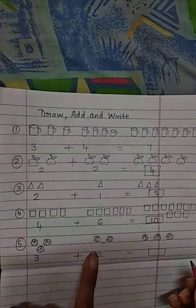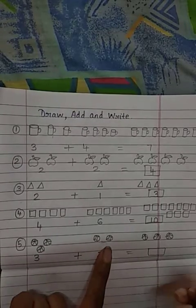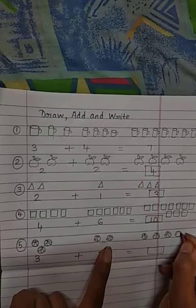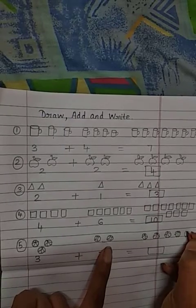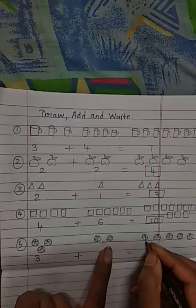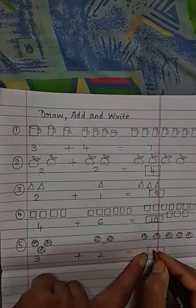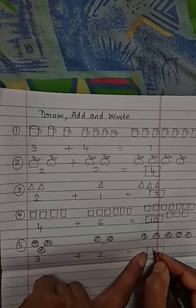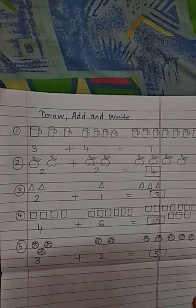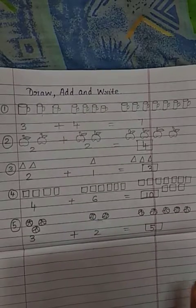3, okay. Now here, how many balls are there? 2 balls, right. So we will draw again 2. 1, 2, 3, 4, 5. So how many balls? 5 balls we will write. After adding this, we will write 5 balls. Like that.